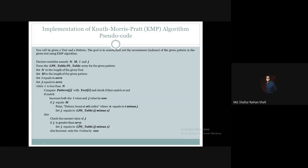If the values are not matched, we just have to increase the value of i by 1. By incrementing i, we advance in the text so that the pattern character at index j and the text character at index i can be compared again.